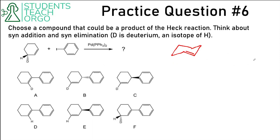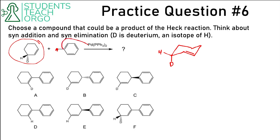Here is another practice question regarding the Heck reaction — feel free to pause and try it. To figure this out, we need to draw the reactant as a chair. If the hydrogen is wedged, it must be in the equatorial position. If the deuterium is dashed, it must be in the axial position. During the Heck reaction, the iodine leaves and the palladium coordinates to that carbon on the six-membered ring.